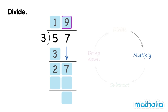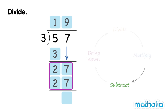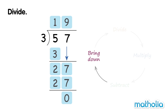Multiply. 9 ones times 3 equals 27 ones. Subtract. 27 minus 27 equals 0. There are no more numbers to bring down. We have finished dividing. 57 divide 3 equals 19.